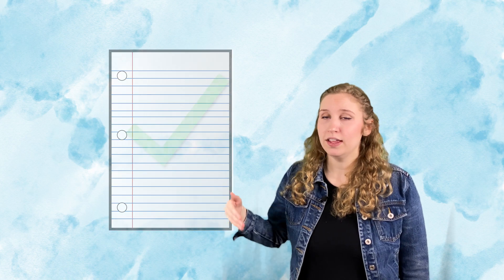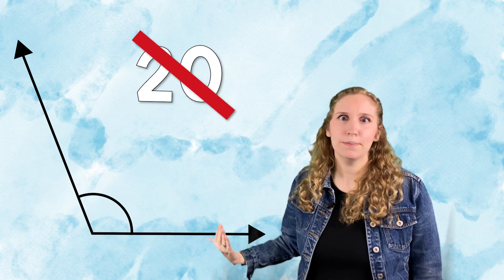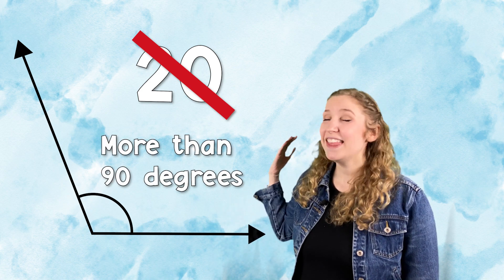So, for example, if you're measuring this obtuse angle, and you see that you are coming up with a smaller degree when you're measuring, like 20 degrees, you can think to yourself, wait a minute. That doesn't make sense. That's an obtuse angle. I know an obtuse angle has to be more than 90 degrees.